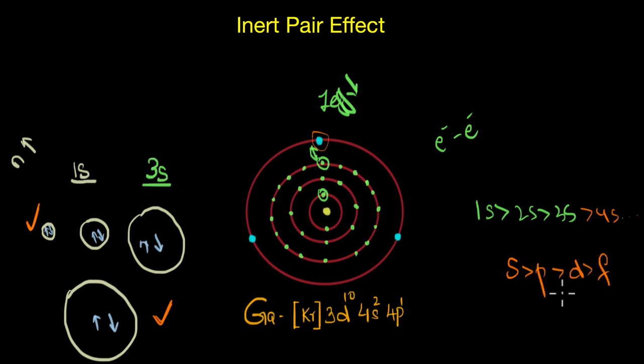Now as we discussed in the last video, because of the poor shielding effect of the d and f orbitals, these valence electrons are drawn closer towards the nucleus. And within that, it becomes more significant for the s electrons, that is, s electrons are drawn closer than the p electron. So as a result, the s electrons would want to remain paired and not participate in chemical reactions. In other words, they would prefer to remain inert.